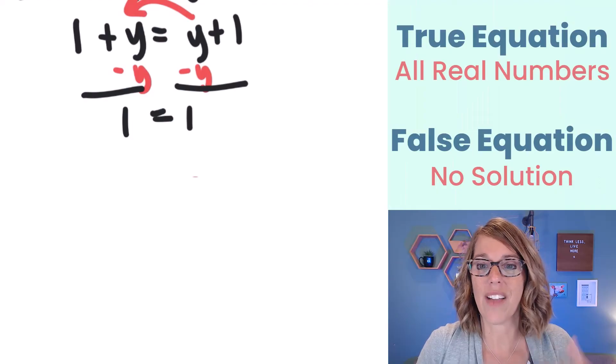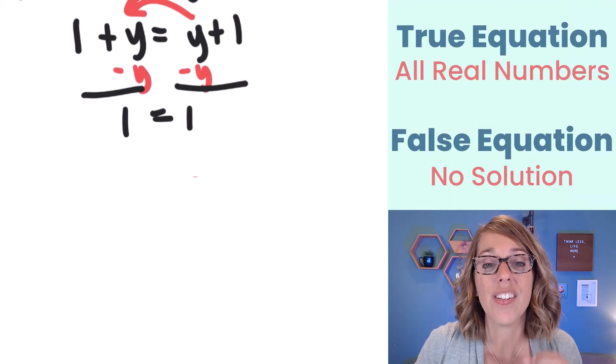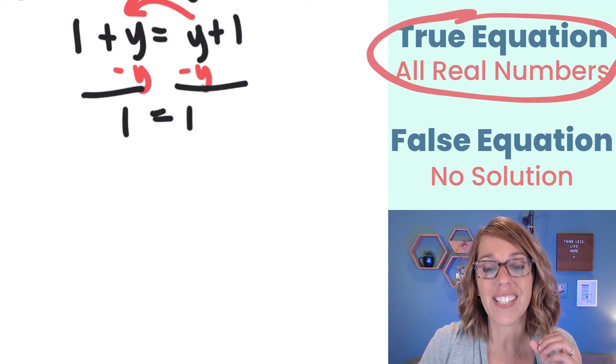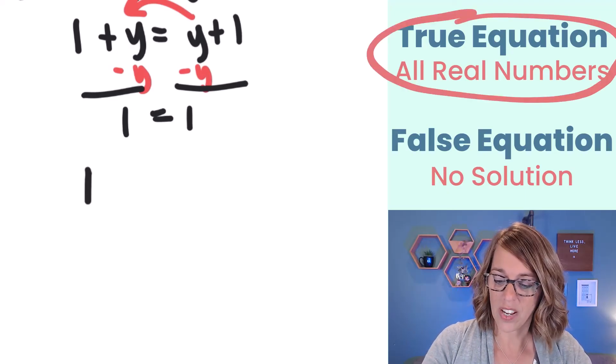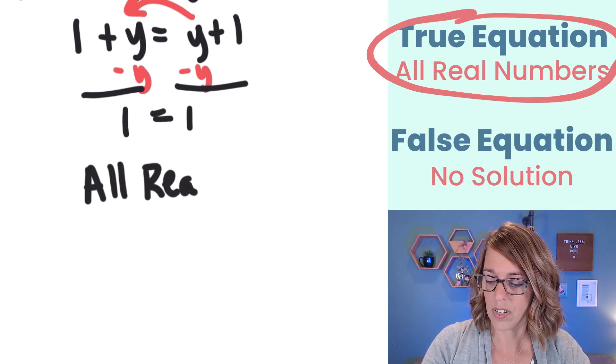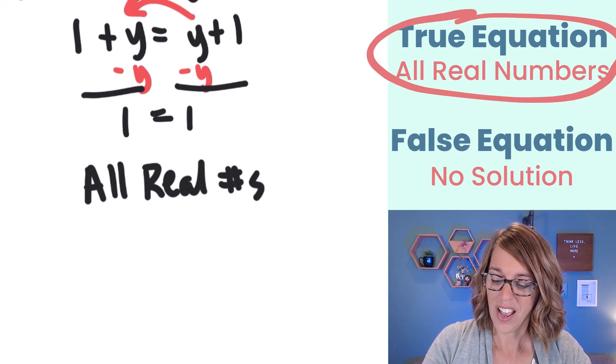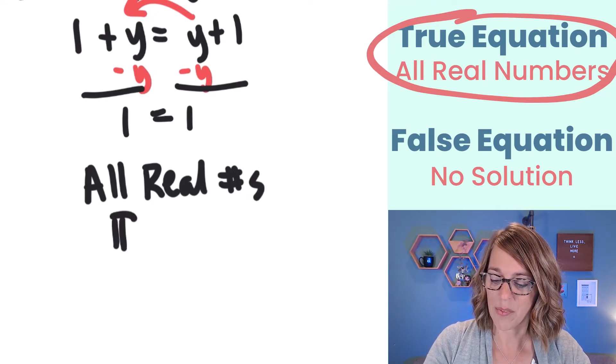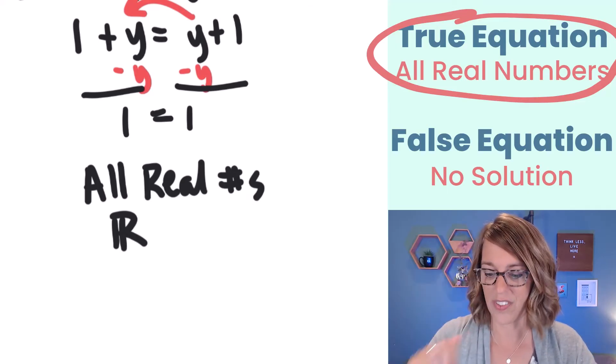So in this one, do we have a true equation? Yeah, we totally have a true equation. So our solution is all real numbers. I can write that solution in a couple of ways. I can say all real numbers, and I'm just going to abbreviate with the number symbol. I can give the set symbol for all real numbers, which is this R with a double bar.